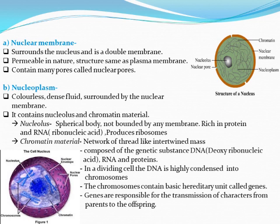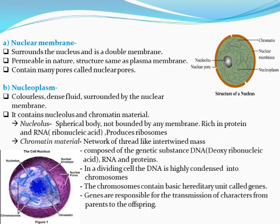The chromatin material is a network of thread-like intertwined mass — coiled around each other. It is composed of a genetic substance called DNA — Deoxyribonucleic acid — along with RNA and proteins. DNA full form is very important for examinations. In a dividing cell, the DNA is highly condensed into chromosomes.